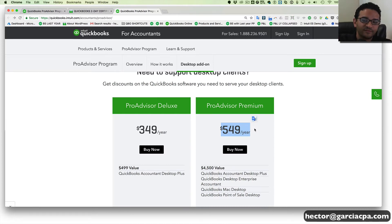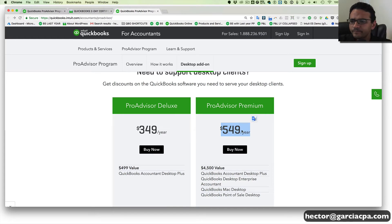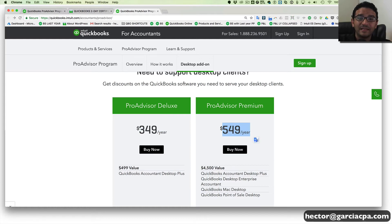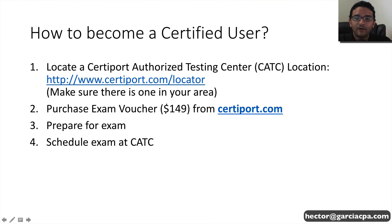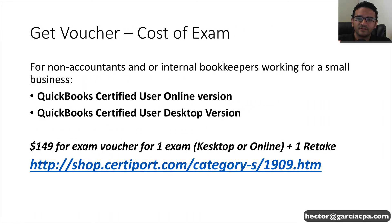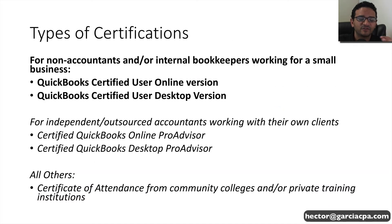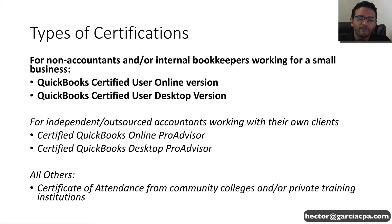By the way, if you're watching this video six months or a year after I recorded it and the price has changed, I'm sorry — that's the price as of June 2018. If you want to become a desktop pro advisor or a desktop and enterprise pro advisor, you would choose these two programs that you pay annually for. The certified user is for those folks that are not accounting professionals — folks looking for a job in a small business, looking for the fastest path to getting some sort of certificate to show employers that they understand how to use the software.